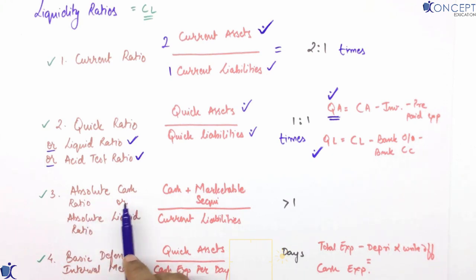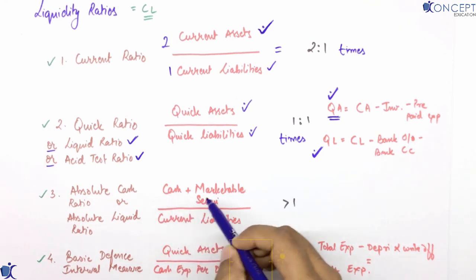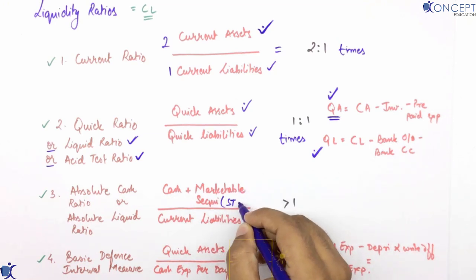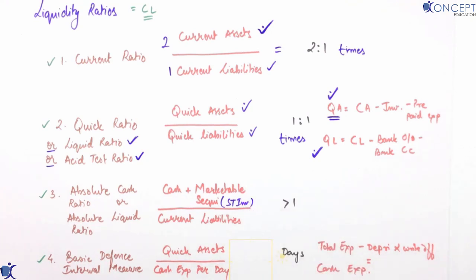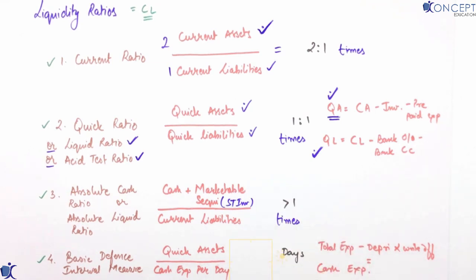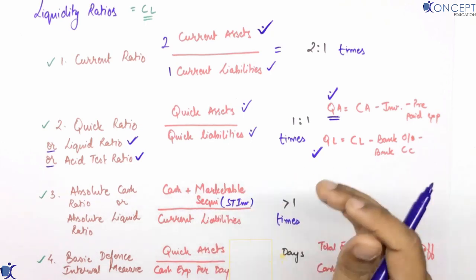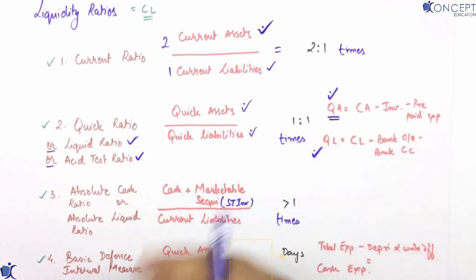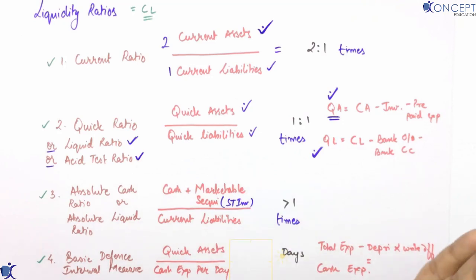Next ratio is absolute cash ratio. Its formula is cash plus marketable securities divided by current liabilities. Marketable securities matlab short-term investments. Answer times mein aata hai. Agar 1 se zyada ho toh bahut achha hai — company bahut liquid state mein hai. Agar 1 se kam ho toh utna achha nahi.